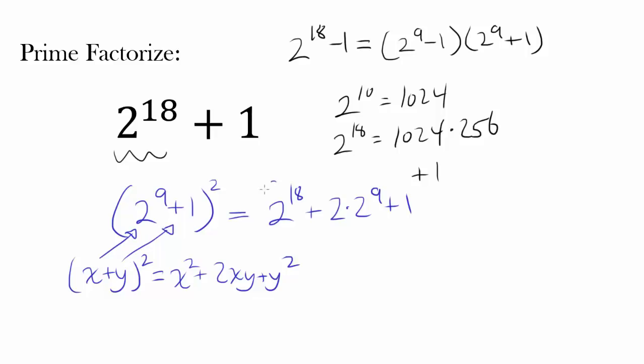So you have 2 to the 9th squared, which is 2 to the 18th, plus 2 times our x, which is 2 to the 9th times y, which is 1, plus y squared. So this expression comes out to be very close to our original expression, 2 to the 18th plus 1 plus 2 times 2 to the 9th.